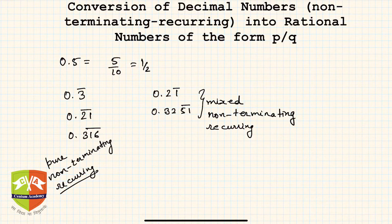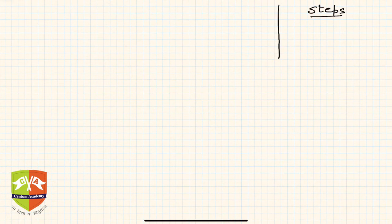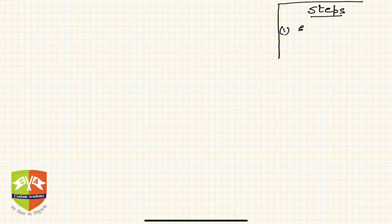In this session, we are going to learn how to convert non-terminating recurring decimal representations into rational numbers. We will jot down all the steps and simultaneously take an example. The first step is: express the given decimal as x.